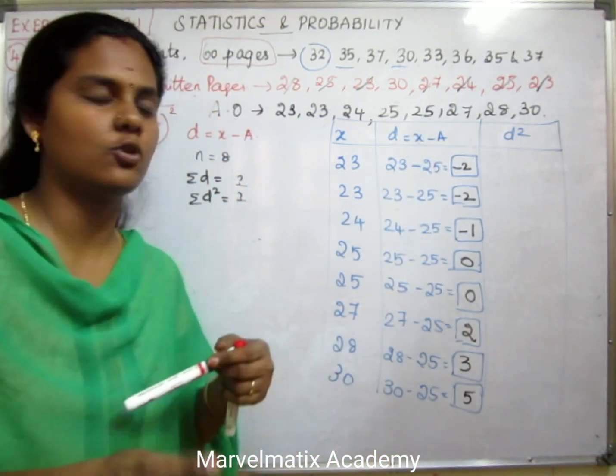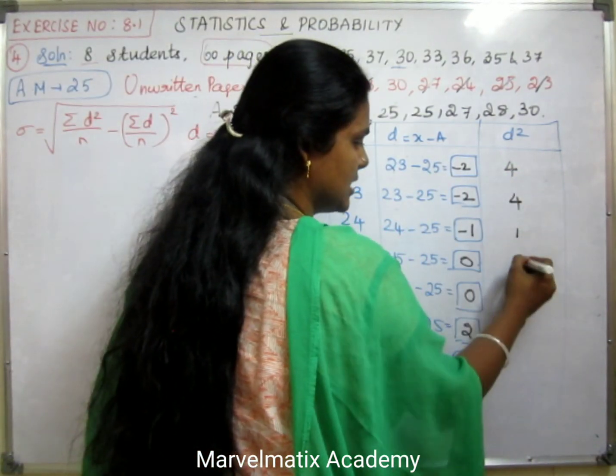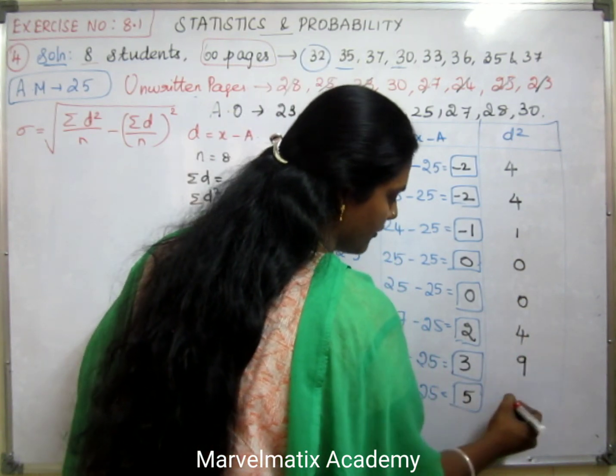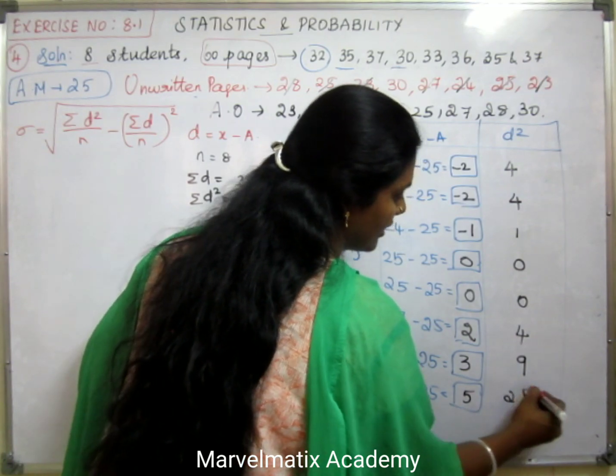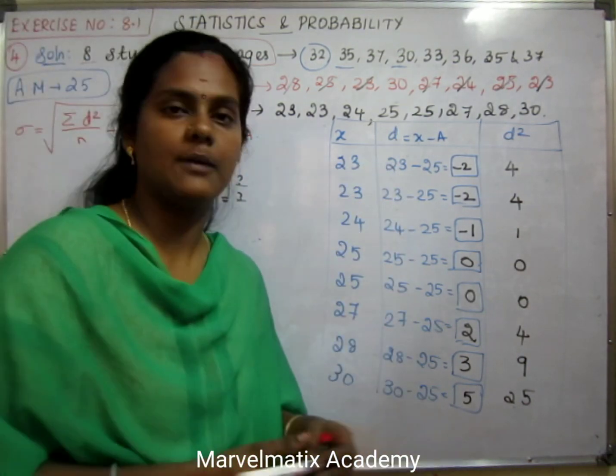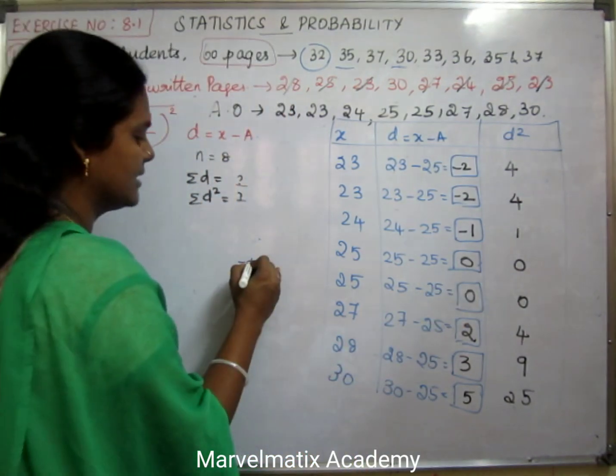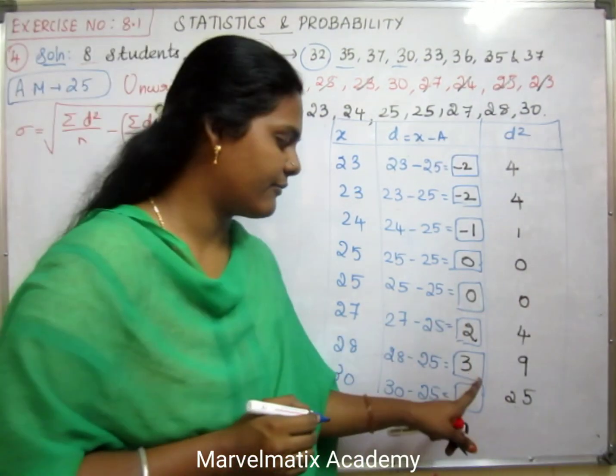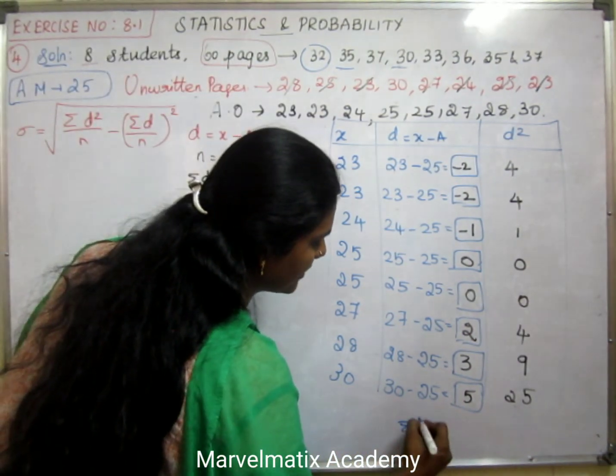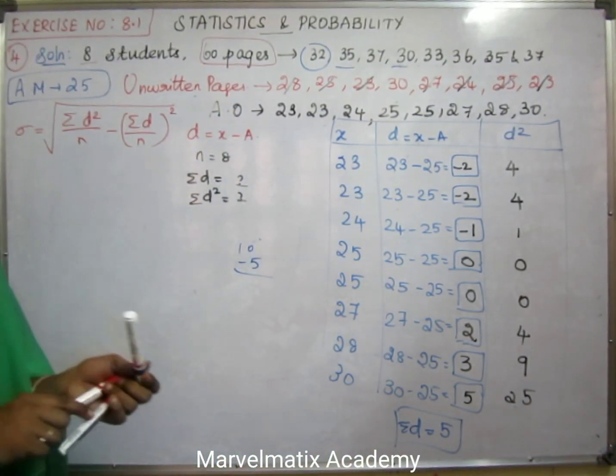Now for d² values: minus 2 squared equals 4, minus 1 squared equals 1, 0 squared equals 0, 0 squared equals 0, 2 squared equals 4, 3 squared equals 9, and 5 squared equals 25. Summation of d values: minus 2 minus 2 minus 1, 0, 0, 2, 3, 5 gives us 5. Summation of d² values: 4 plus 4 plus 1 plus 0 plus 0 plus 4 plus 9 plus 25 equals 47.